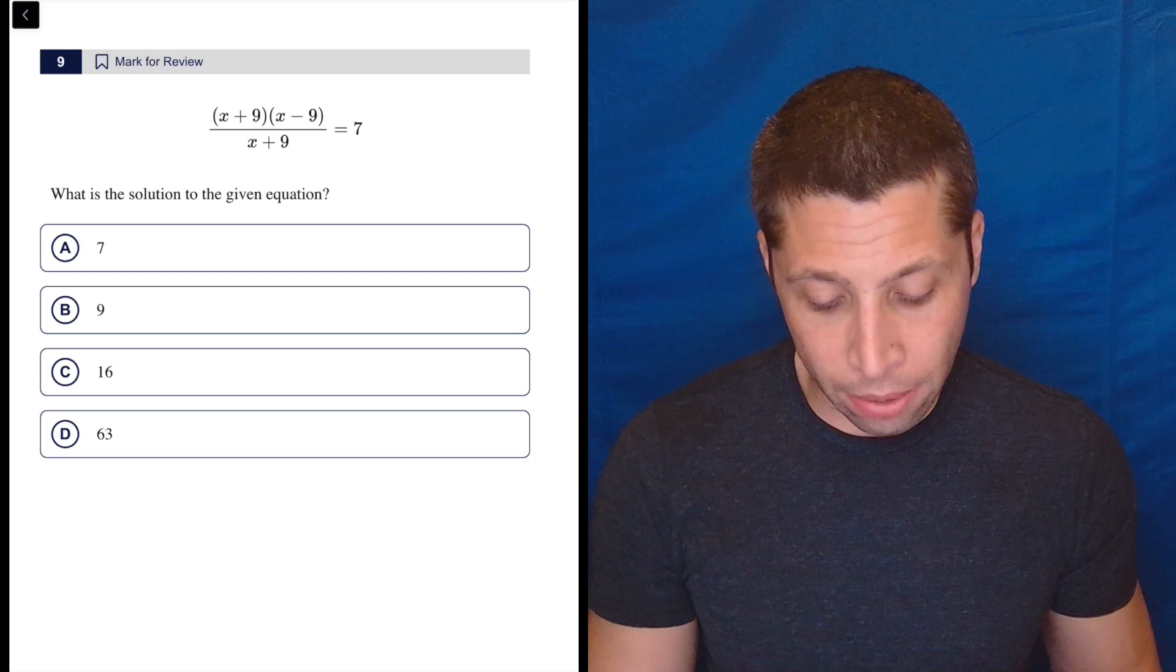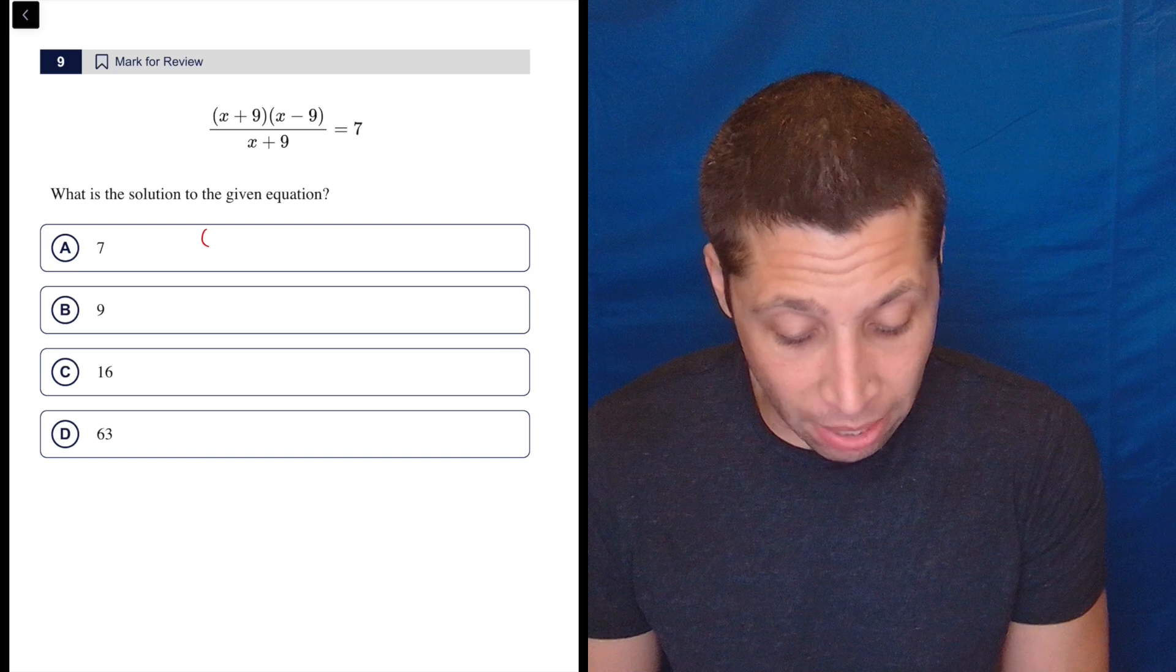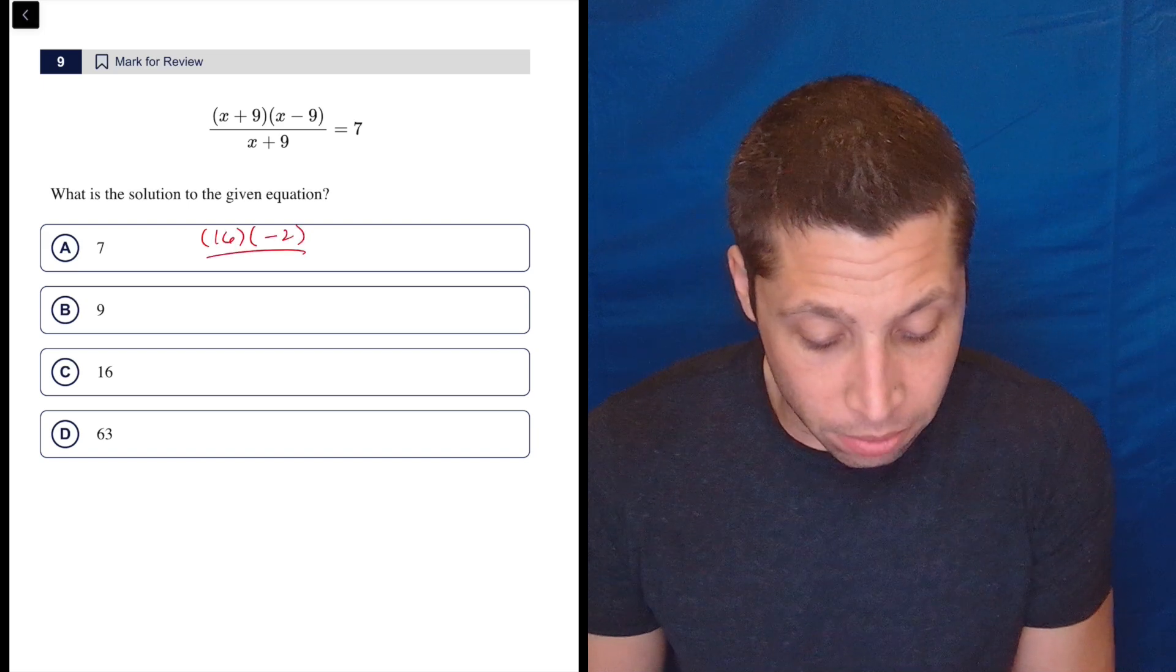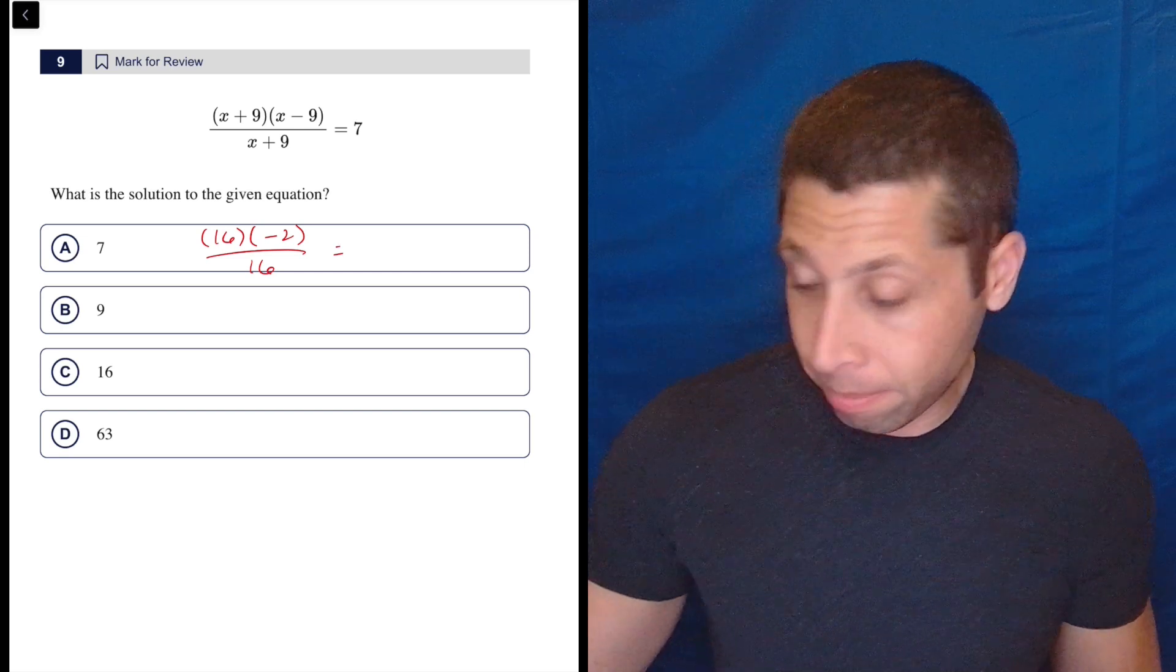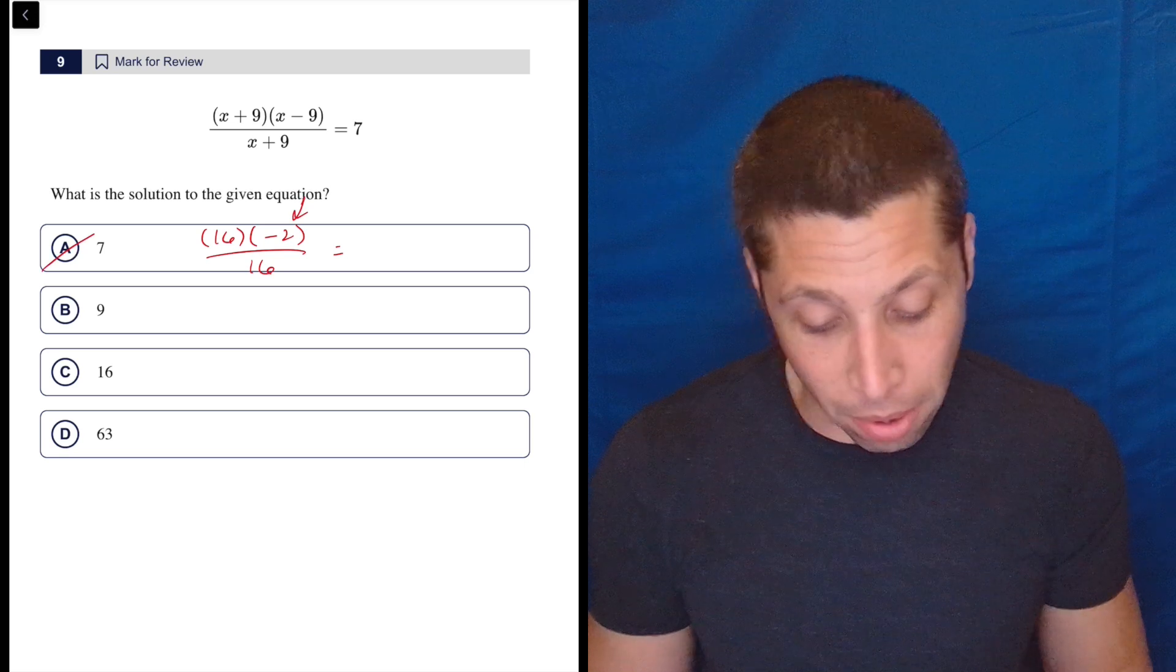So if I were to plug in, we can go whatever order you want, 7. We would just have 7 plus 9 is 16. 7 minus 9 is negative 2 divided by 7 plus 9 is 16. So is that equal to 7? Let's find out. Well, no, it's not because it's going to be negative. So never mind. Don't even bother.